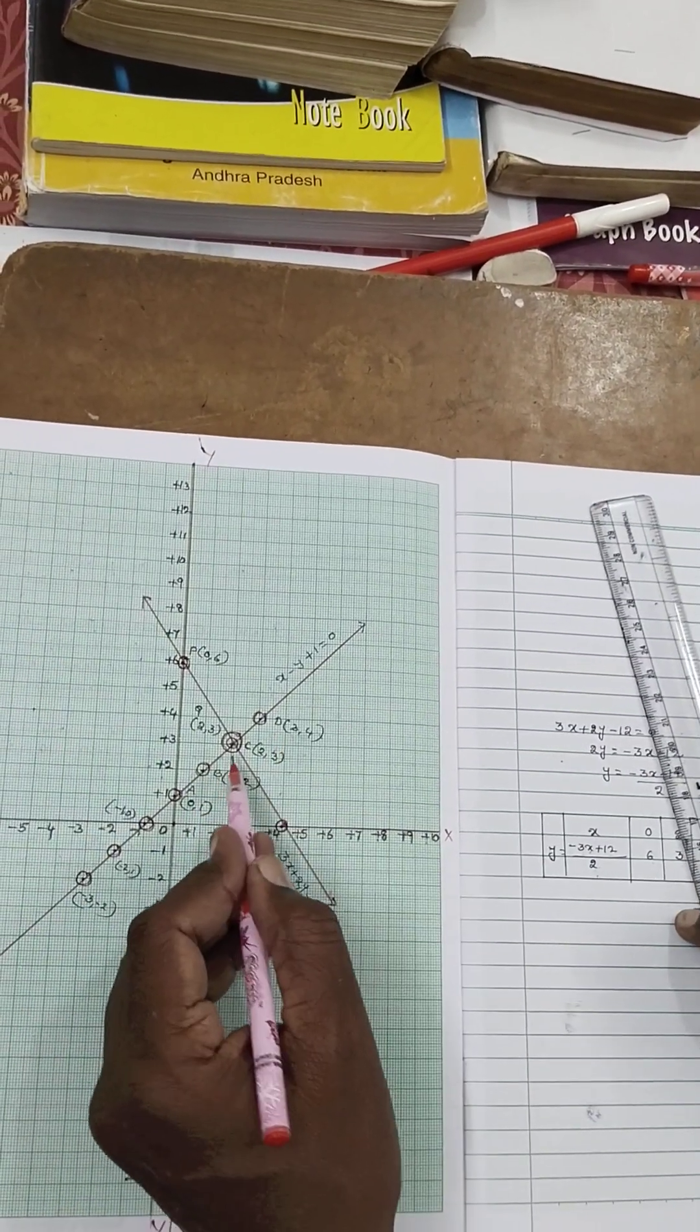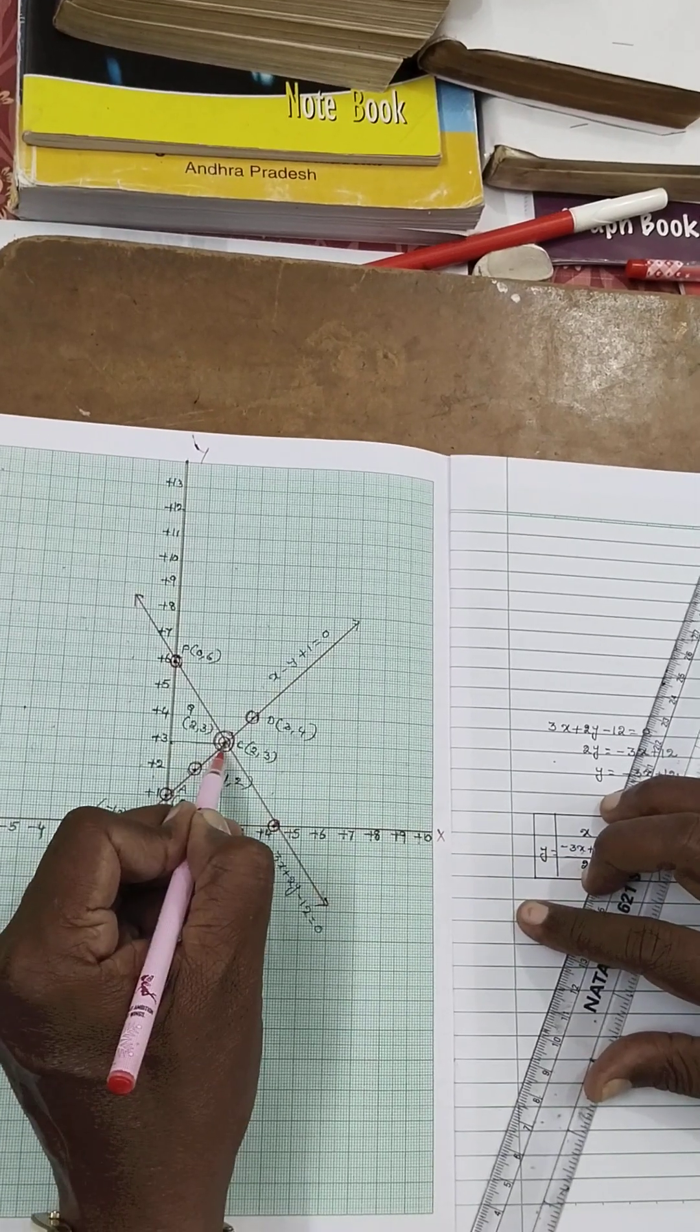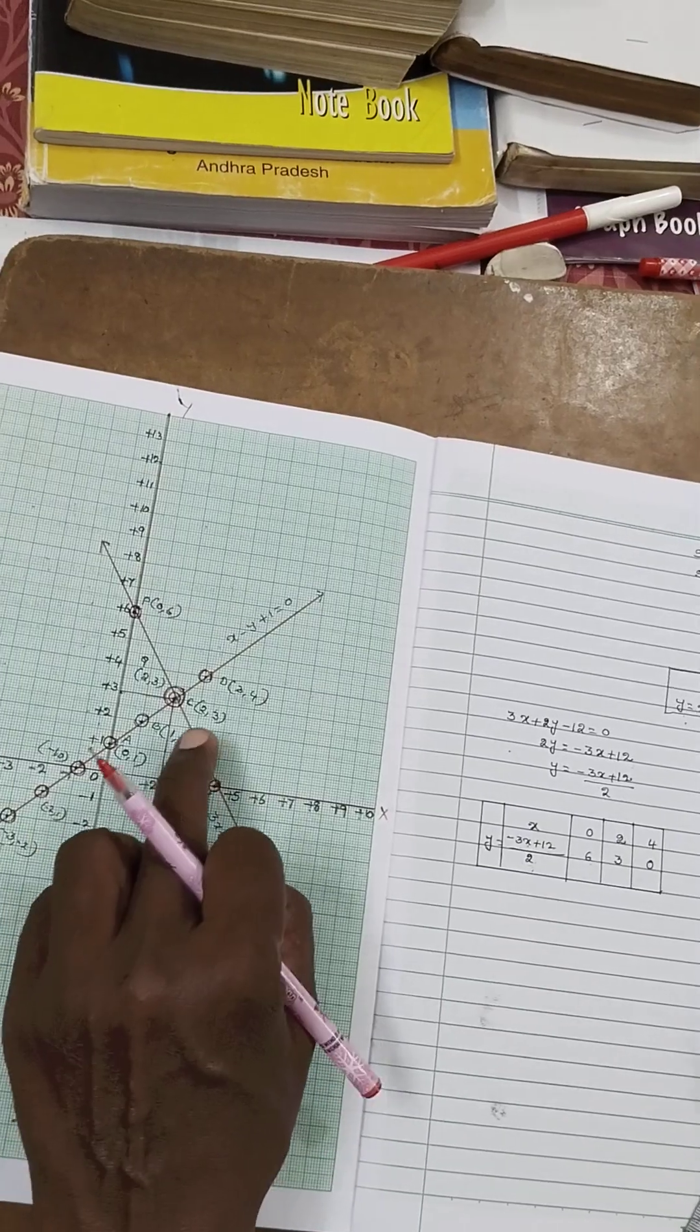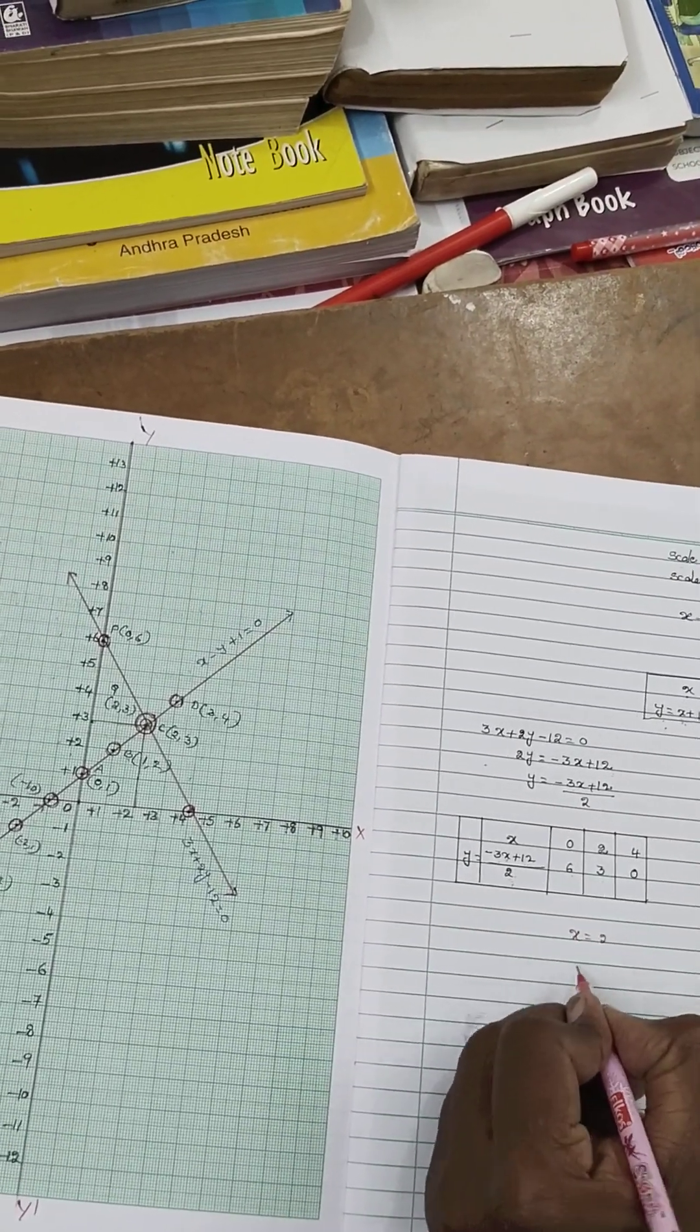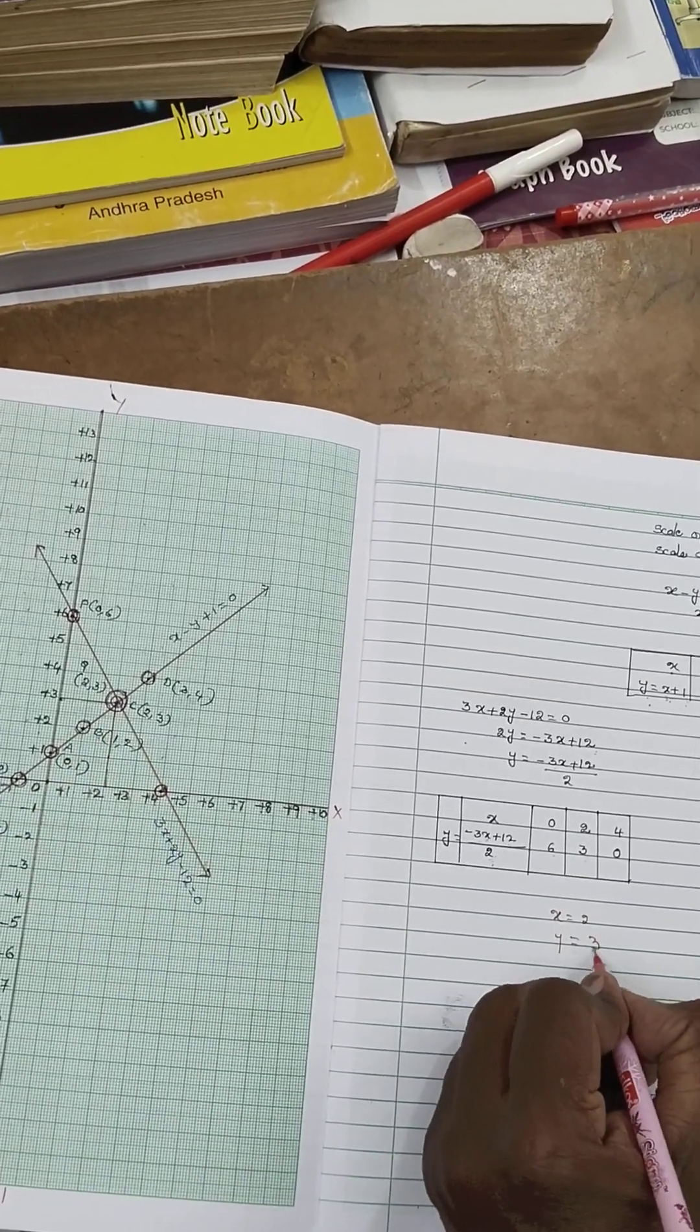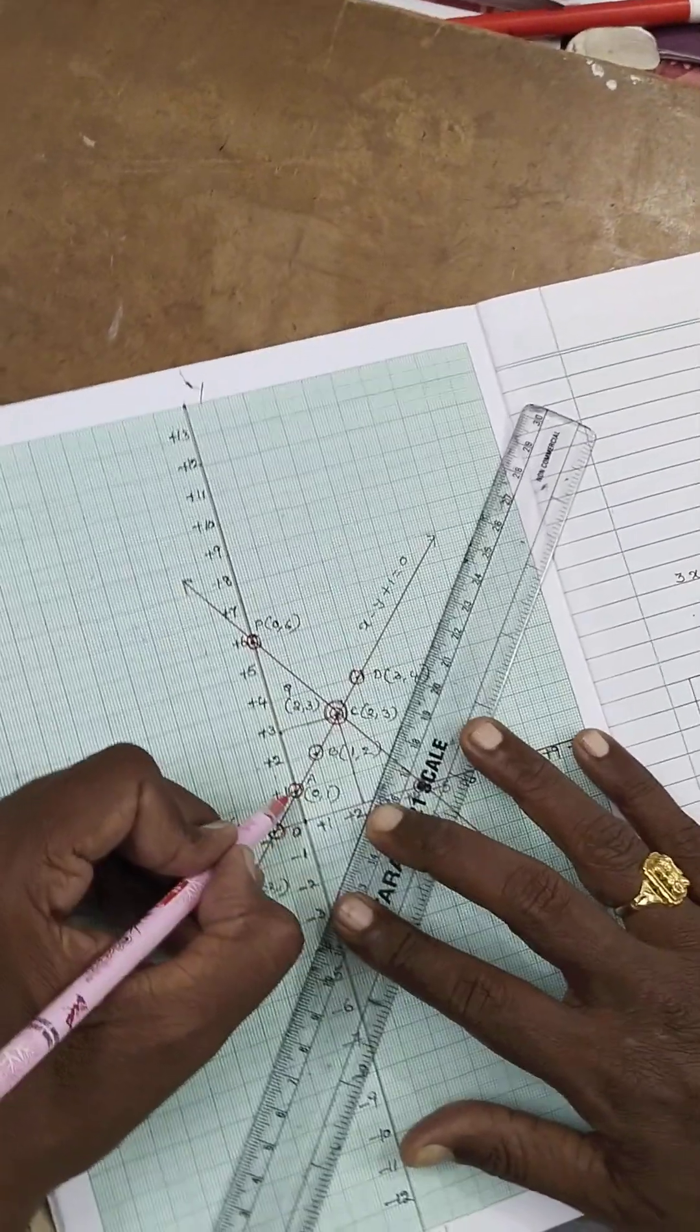So these two lines intersect here. Then you draw the line to here. And this one. So here, at which point? 2 comma 3. x is equal to 2 and y is equal to 3. Intersect point. So this is the frame of the triangle.